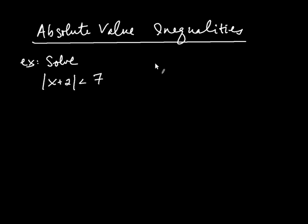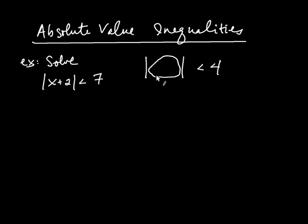Let's say that you had the following situation: you were told that the absolute value of something is less than 4. What can be put in there that would make this statement true? For example, could I have the number 6? Well, if you put 6 in there, it's not true, because the absolute value of 6 is 6, which is not less than 4. So 6 won't work. What if you try 5? No, for the same reason — the absolute value of 5 is 5, which is not less than 4.